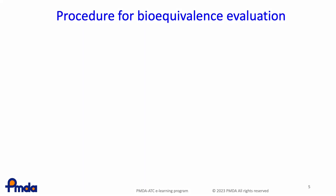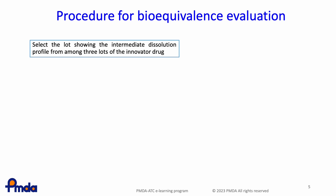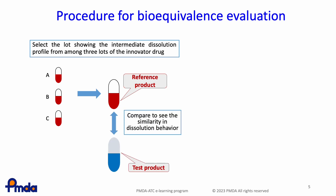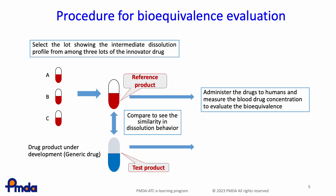Next, we will take a look at the steps in the procedure for bioequivalence evaluation. First, a reference product is selected. Among three lots of the innovator drug, the one with an intermediate dissolution profile should be selected as the reference product. Next, the reference and test products are compared to prove the similarity of dissolution profiles. Finally, the reference and test products are administered to humans and the drug blood concentration is measured to evaluate the bioequivalence.